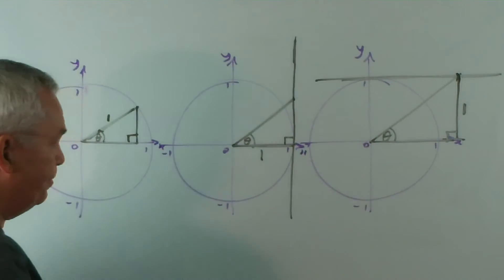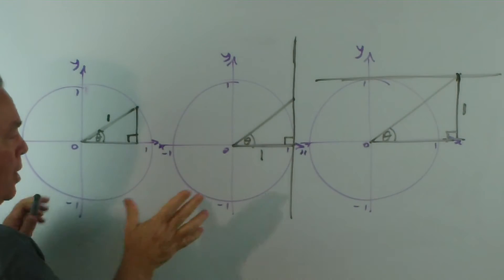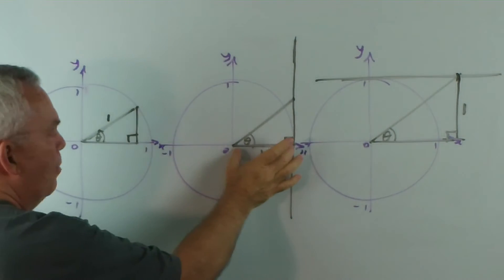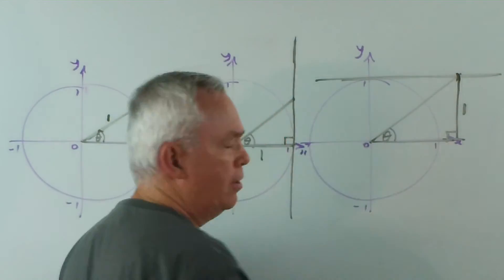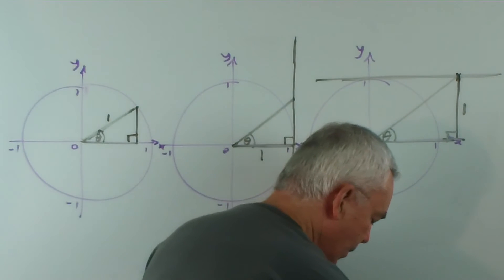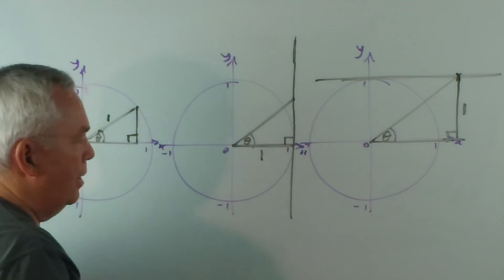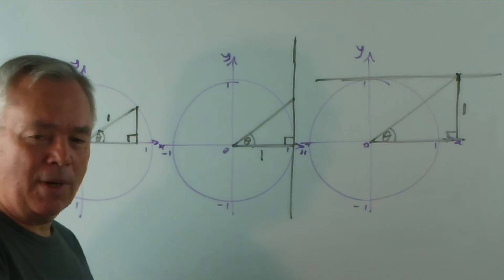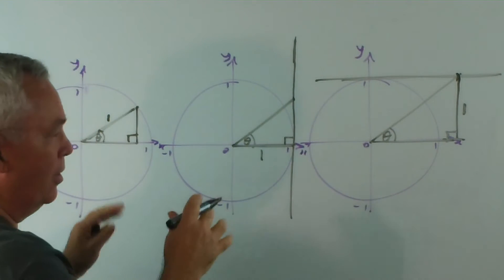So, our three triangles, all in the same position, all with angle theta, have a hypotenuse of one, a base of one or an altitude of one. Now, there are six trigonometric ratios you need to know, and believe it or not, they're all here.